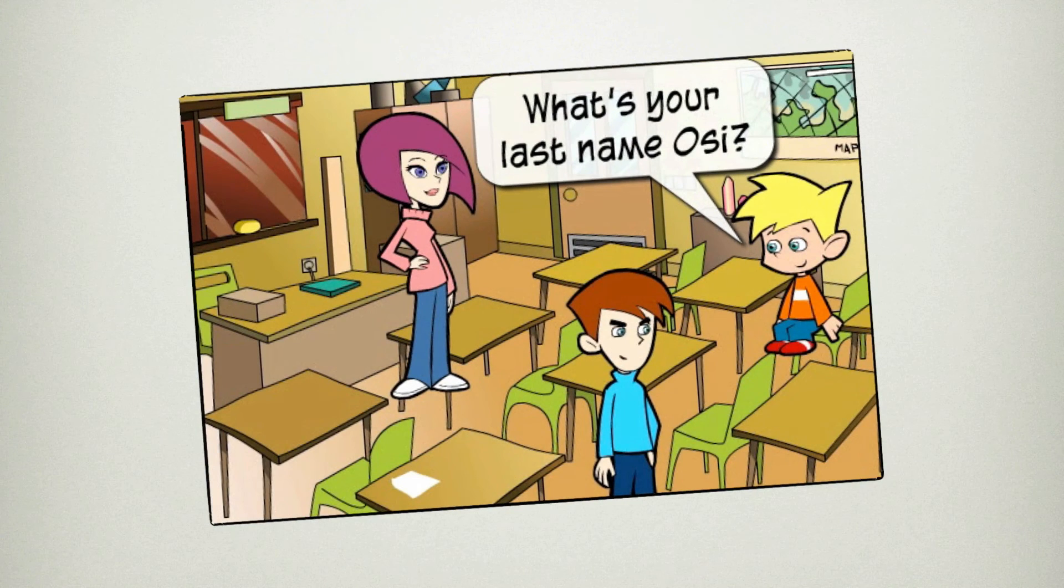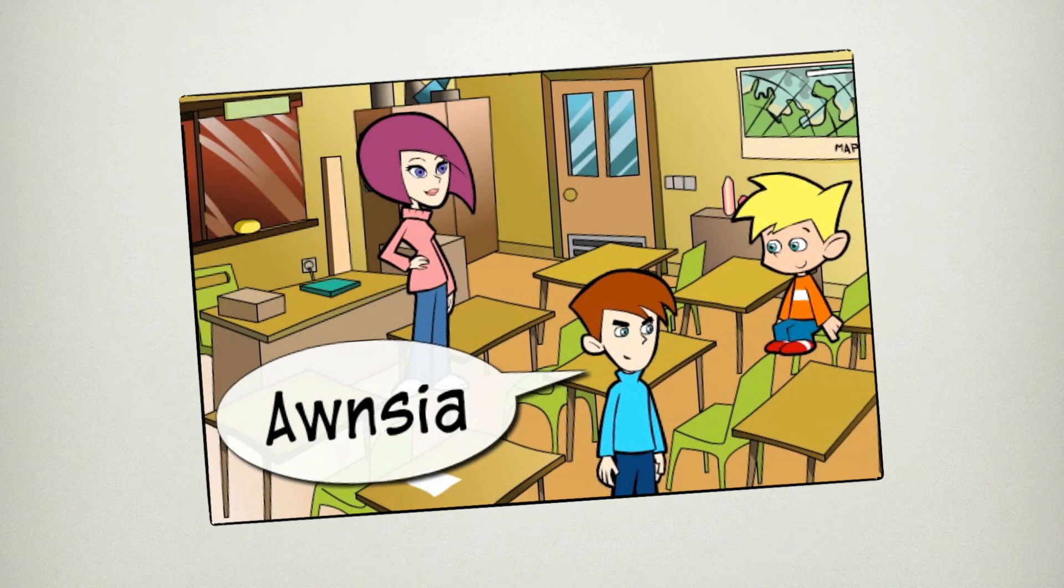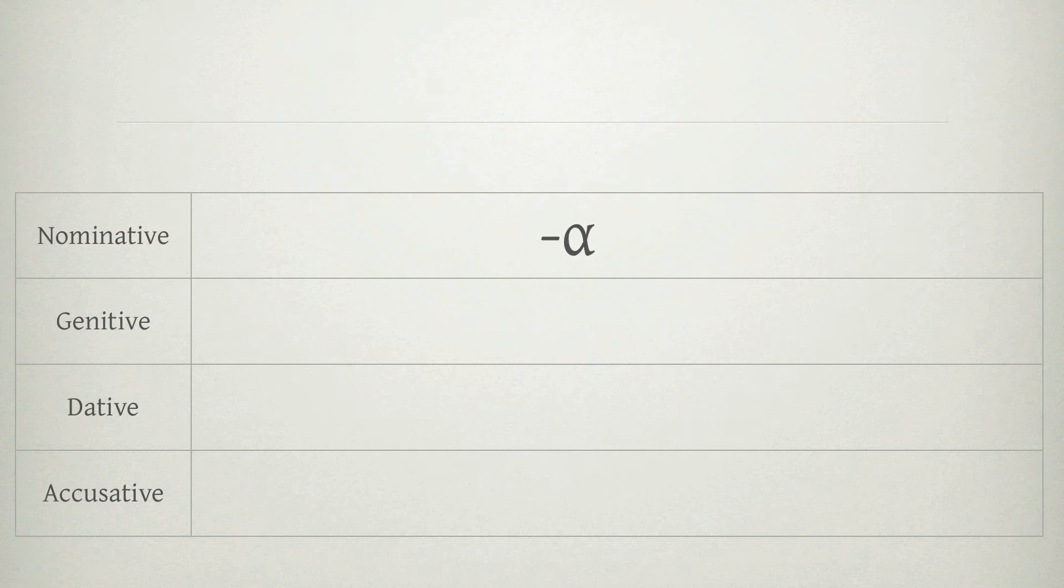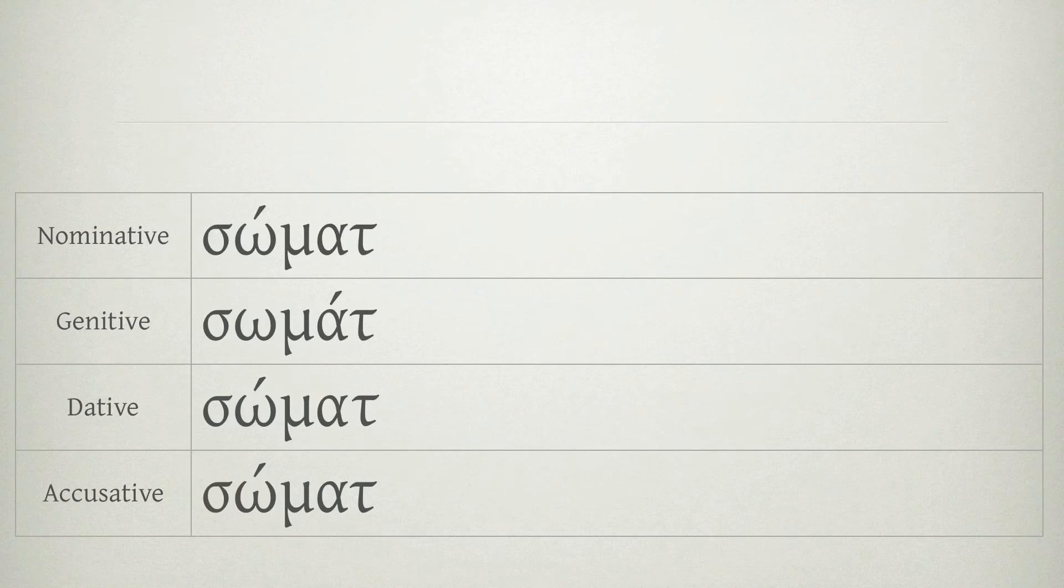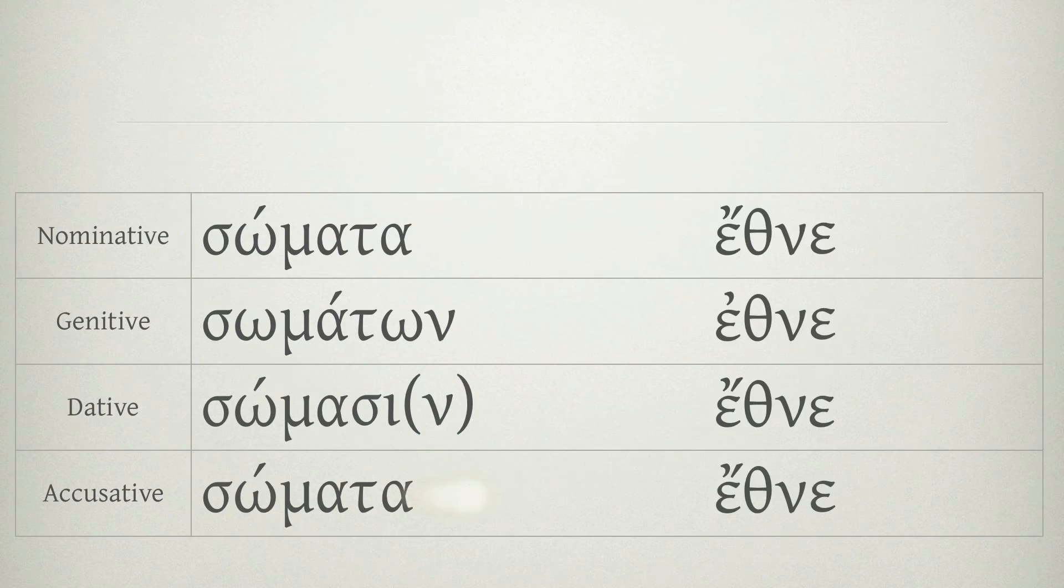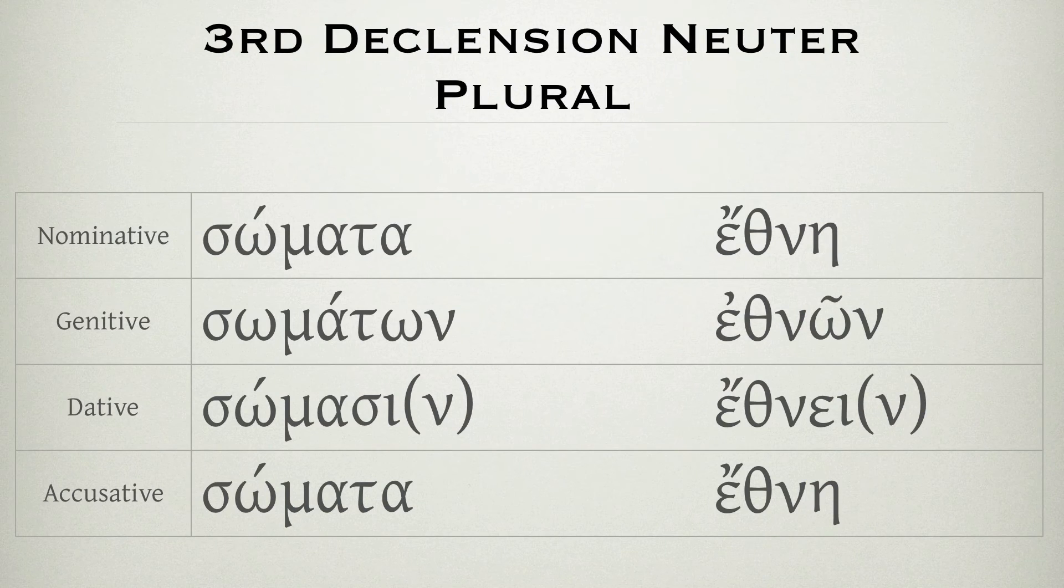Now Aussie has a last name too, and it is A-O-N-C. C-I-A-Own, C-I-A-Own, C-I-A-Own, third declension, neuter plural.